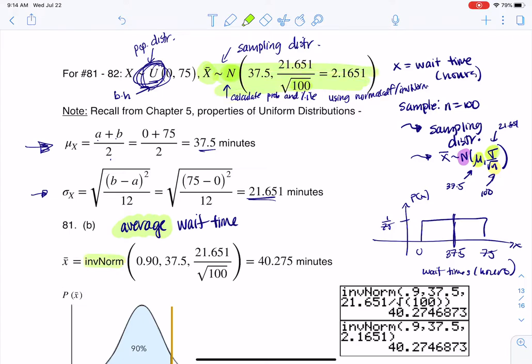So again, if it had asked for the 90th percentile of just wait times, that's when I would have done base times height is equal to 0.90. Because that's the uniform stuff. Now I'm going to erase it because we weren't asked that. So I go ahead and I crunch that number on my calculator. I get that the 90th percentile is about 40.275 minutes.